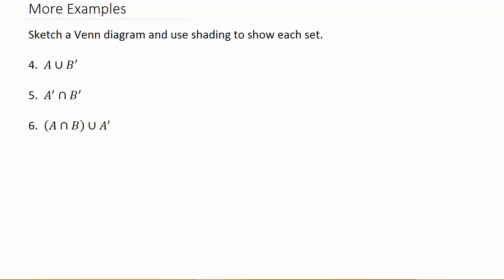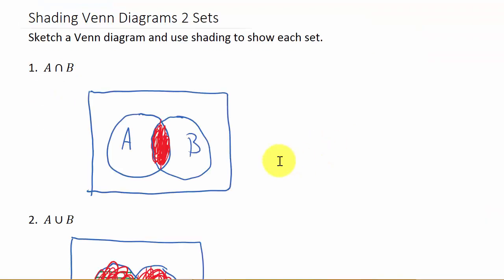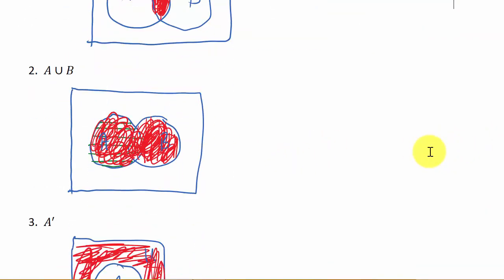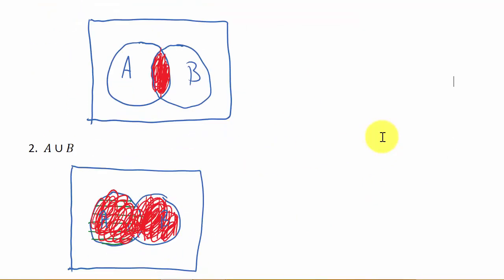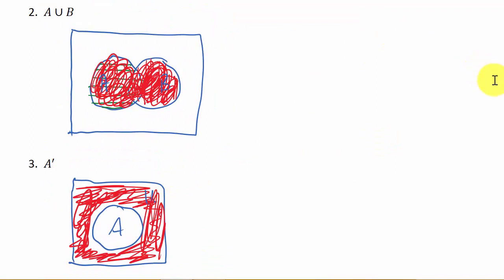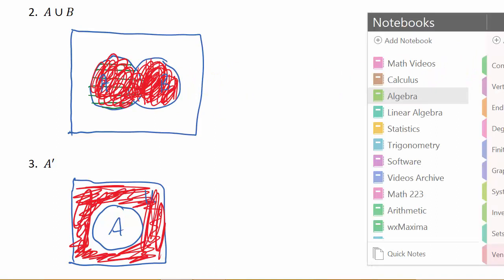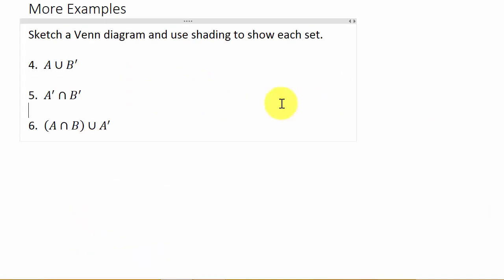This is part two of Venn diagrams with two sets. Check out the first video — it goes over the basic ones: intersection, union, and complement. Understanding those three makes it a lot easier to do what we're about to do. I'll have a link in the description to the first part, and I'll also have a video where we have three sets — A, B, and C — so you might want to check that out as well.